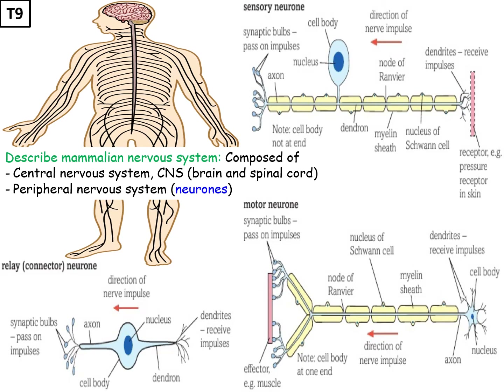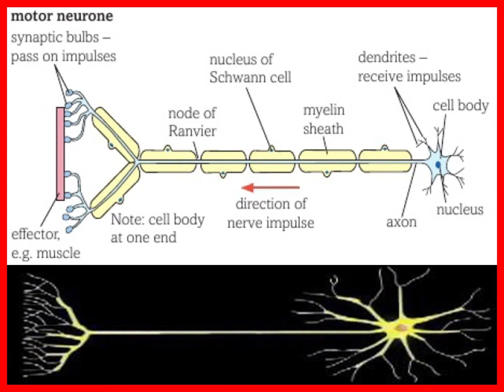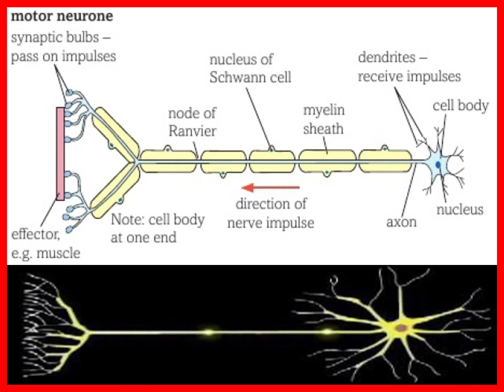Motor neurons transmit electrical impulses to effectors - muscles or glands - which cause the required response to a stimulus. Looking at motor neuron structure in detail: dendrites are on the cell body, axons are covered by myelin sheaths (made of fatty Schwann cells) with gaps known as nodes of Ranvier, and they connect to effectors. A diagram shows how an electrical impulse is transmitted across an axon.